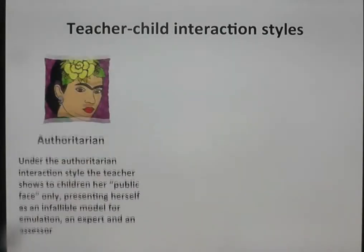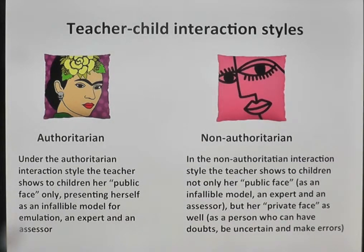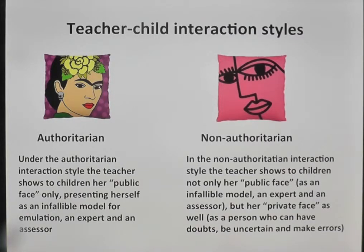When projected onto teacher-child interaction styles, we can say that under the authoritarian interaction style, the teacher shows to children her public face only, presenting herself as an infallible model for emulation, as an expert and an assessor. Under the non-authoritarian style, she shows her private face as well, as a person who can have doubts, be uncertain, and make errors.